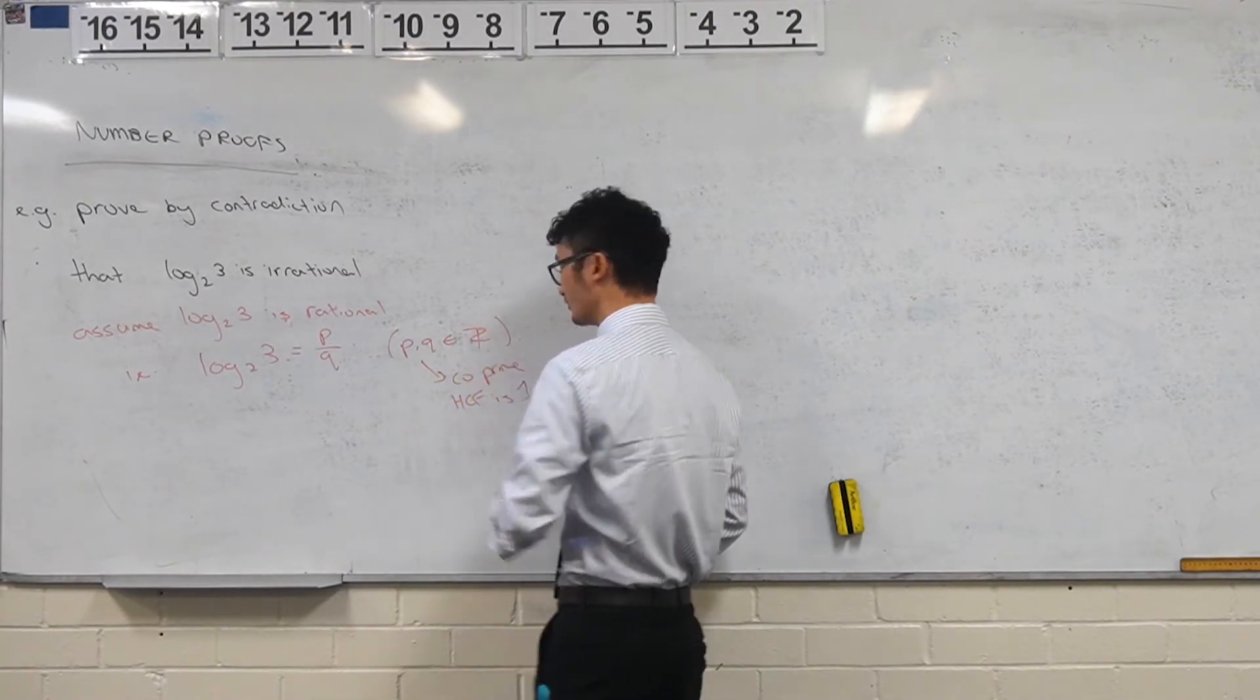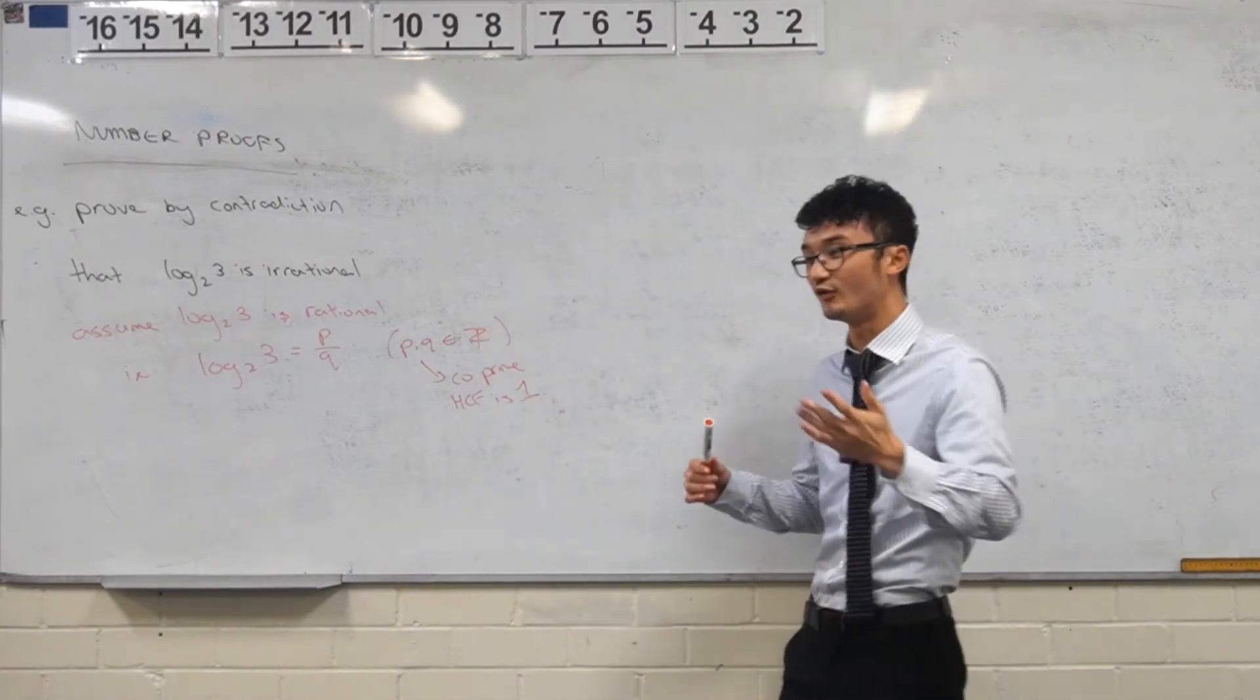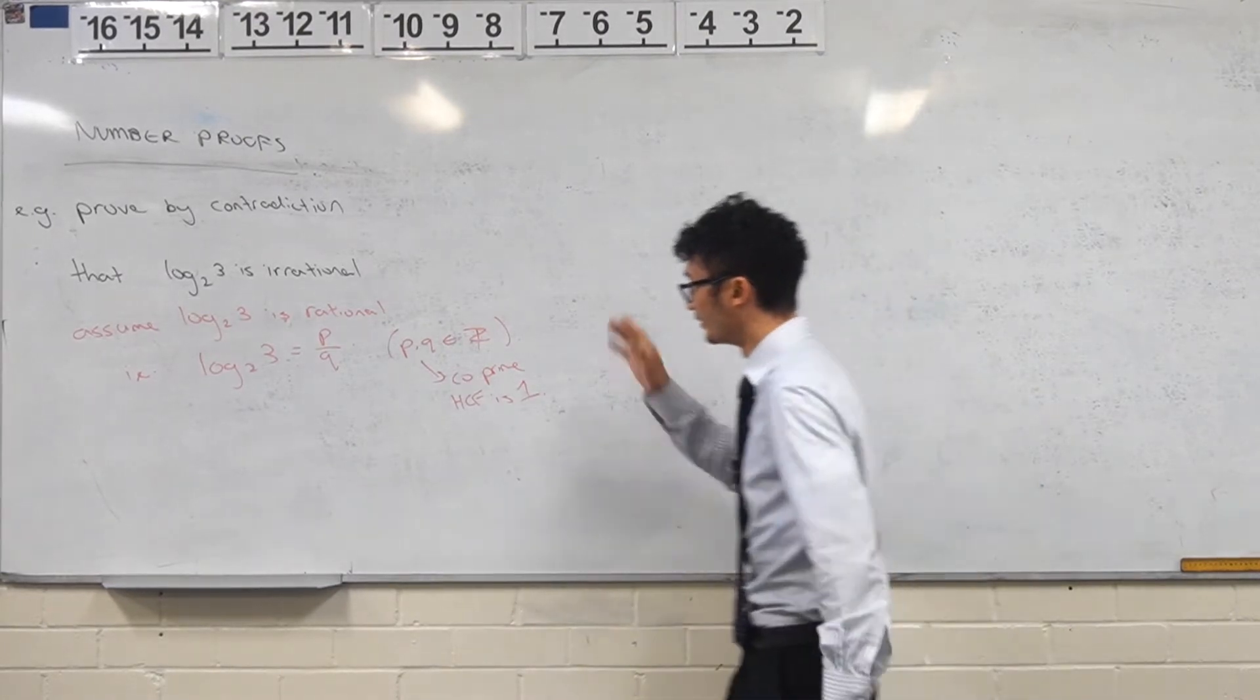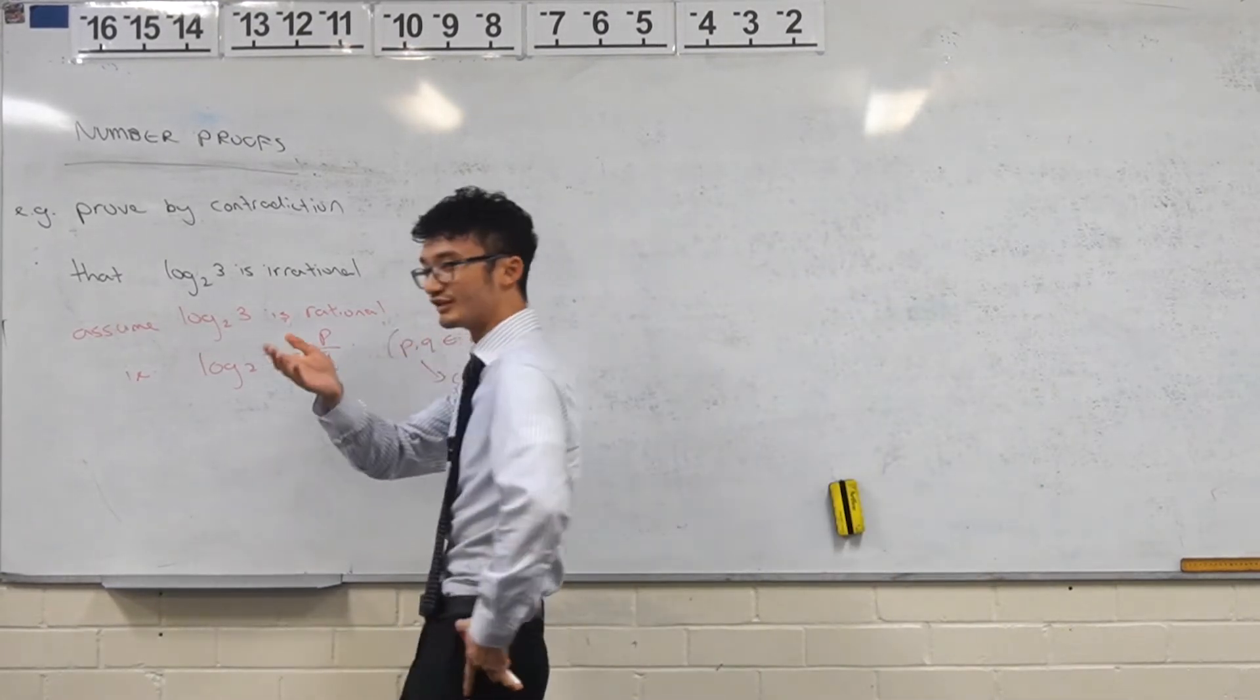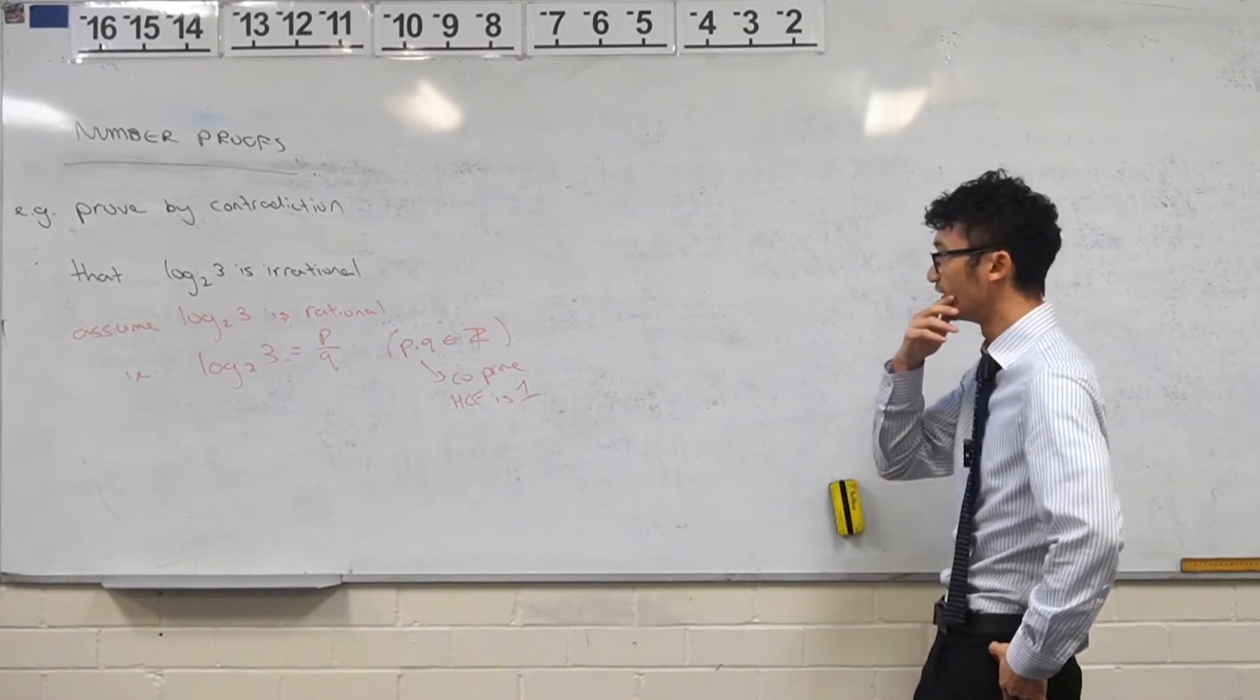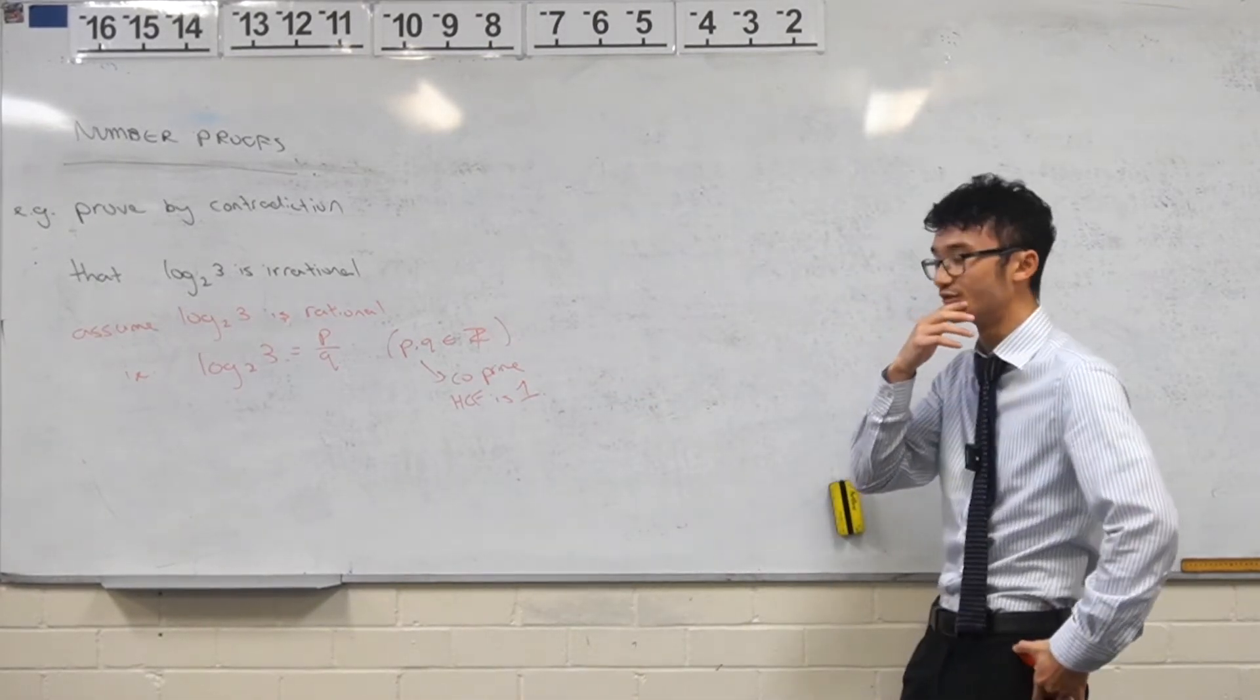So it's basically saying, hey, we can write this fraction in its most simplified form. The reason why that's important is because that's actually the condition we use for the contradiction, right? But in the last one that we had, we did something like the root 2 and we could square both sides, right? But this one, I mean, there's not really much we can do with that.